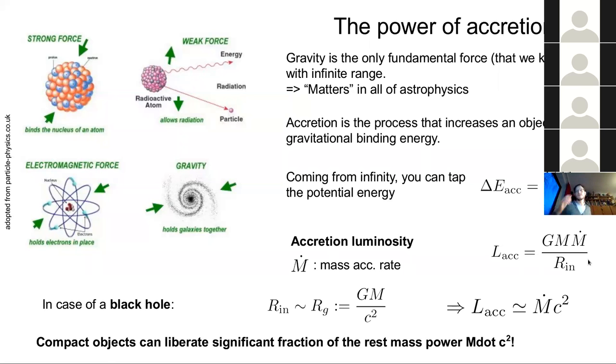So formally, in case of a black hole, we just say most radius is the gravitational radius, GM over c squared. So the fundamental radius of Einstein's theory of gravity, in terms of black holes, at least. You actually find out, somewhat coincidentally, that the accretion luminosity, so the power that you get, is just m dot c squared. So basically, you're tapping all the rest mass power.